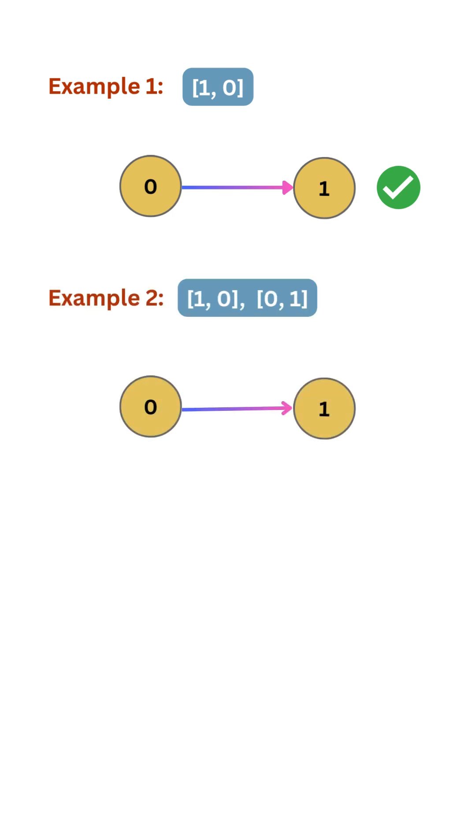they've added 0, 1 to the list. This means, in addition, course 1 is the prerequisite of course 0. Now we have a cycle, and if there's a cycle, we cannot finish all the courses, and so the answer is false.